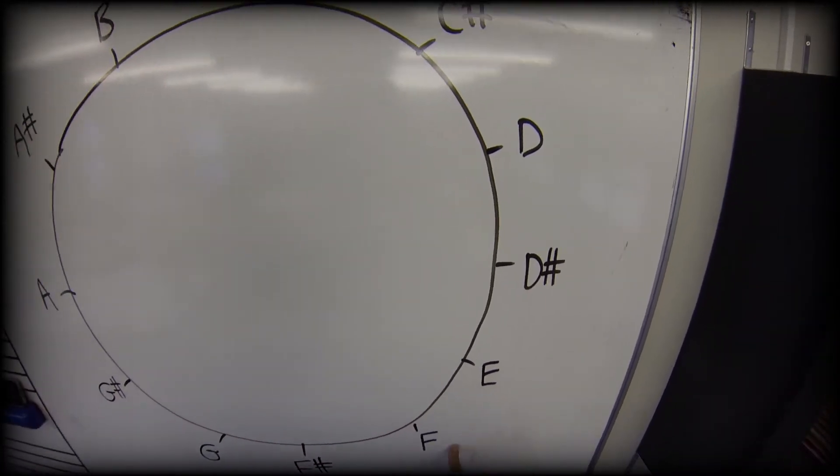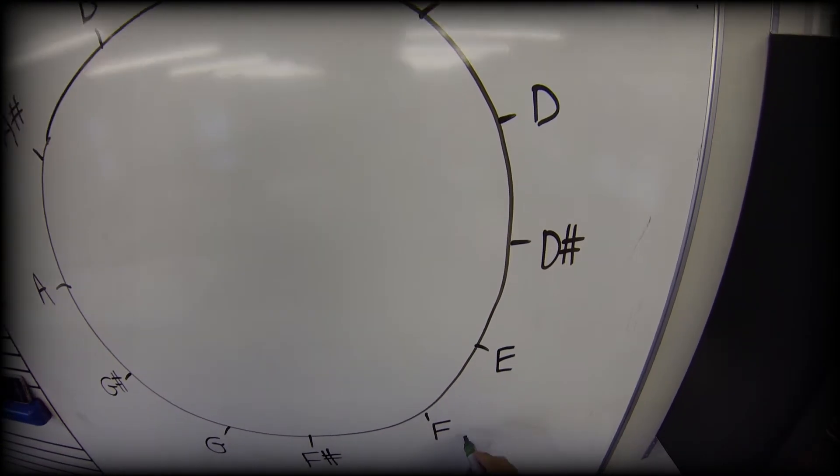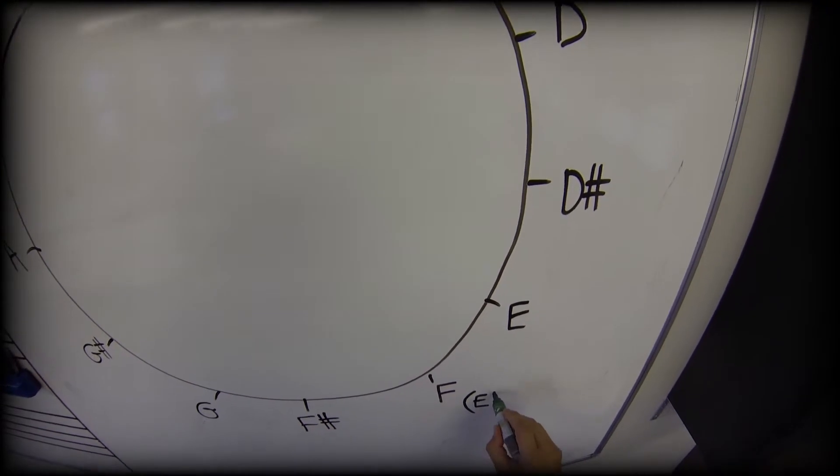In the same way, if we sharpen an E, we go one step in the clockwise direction, and so we can also call this part of the clock E sharp.